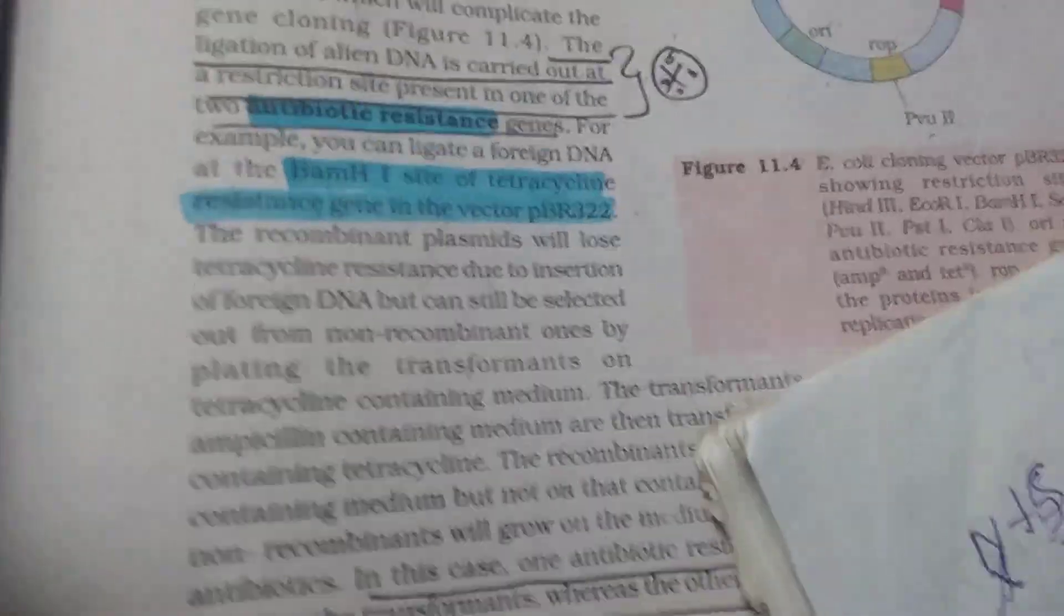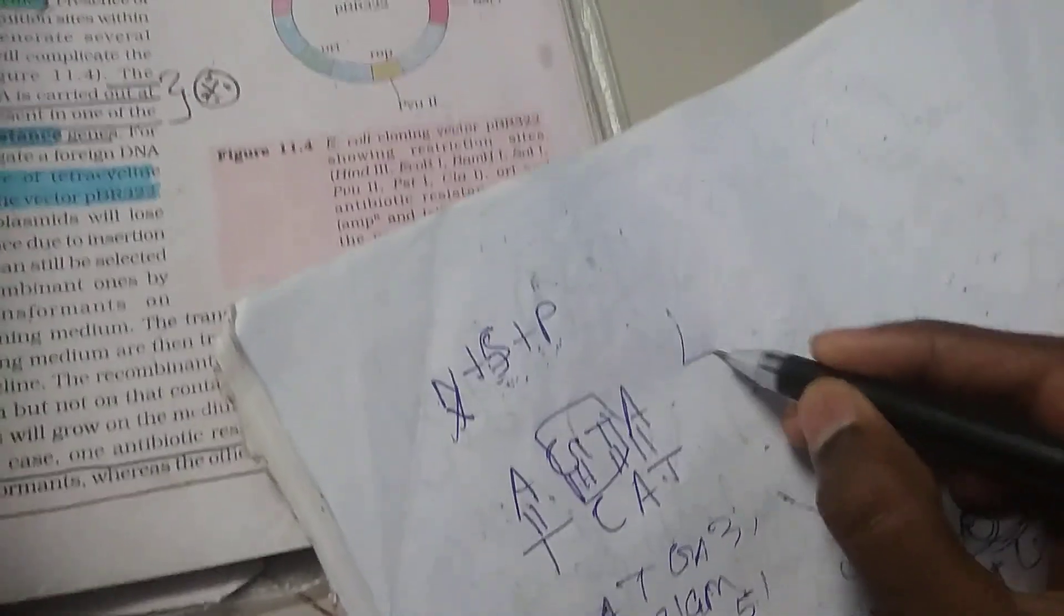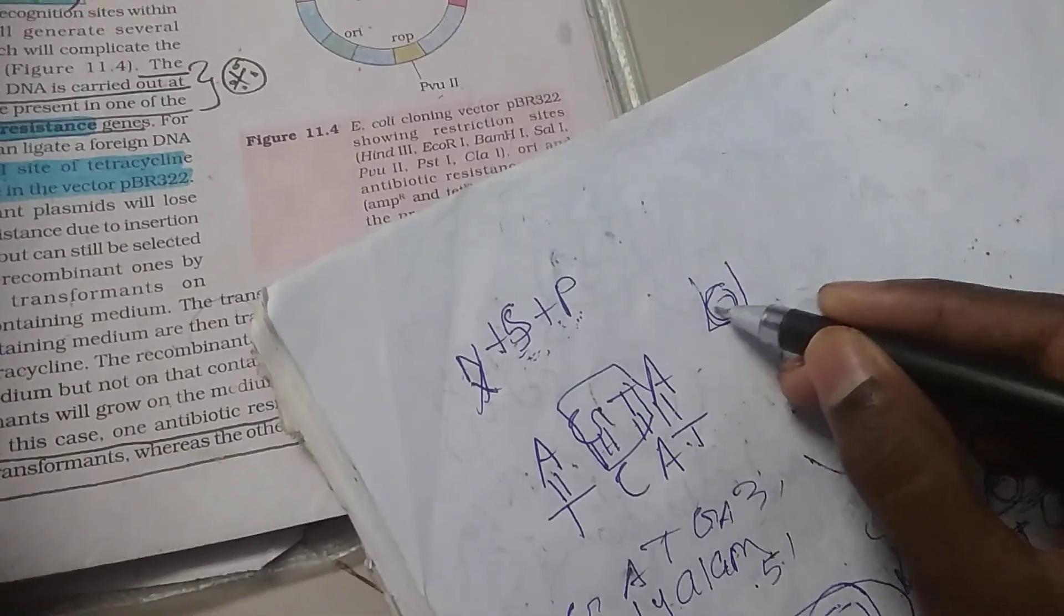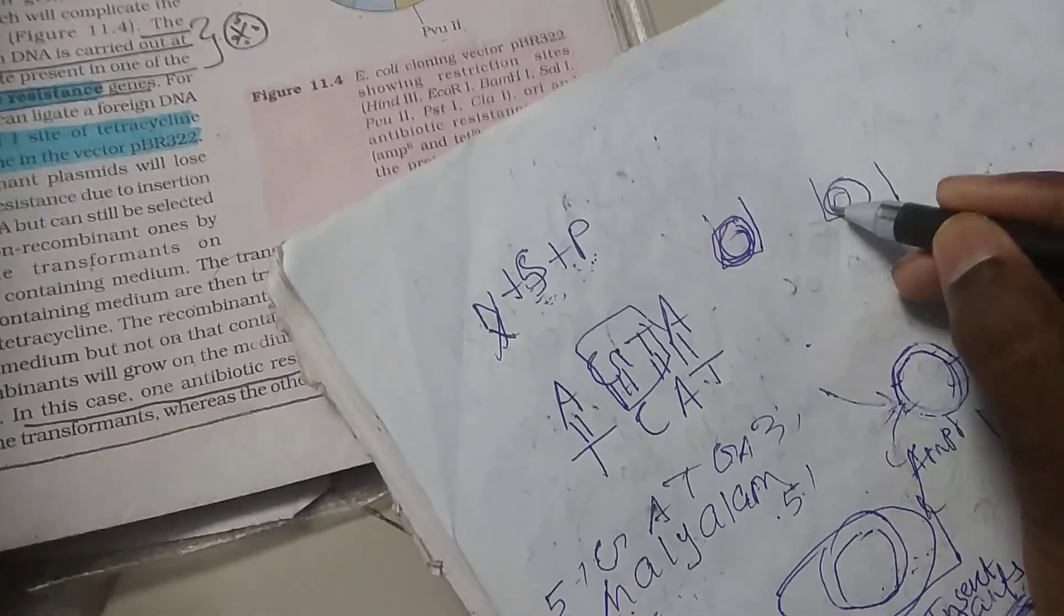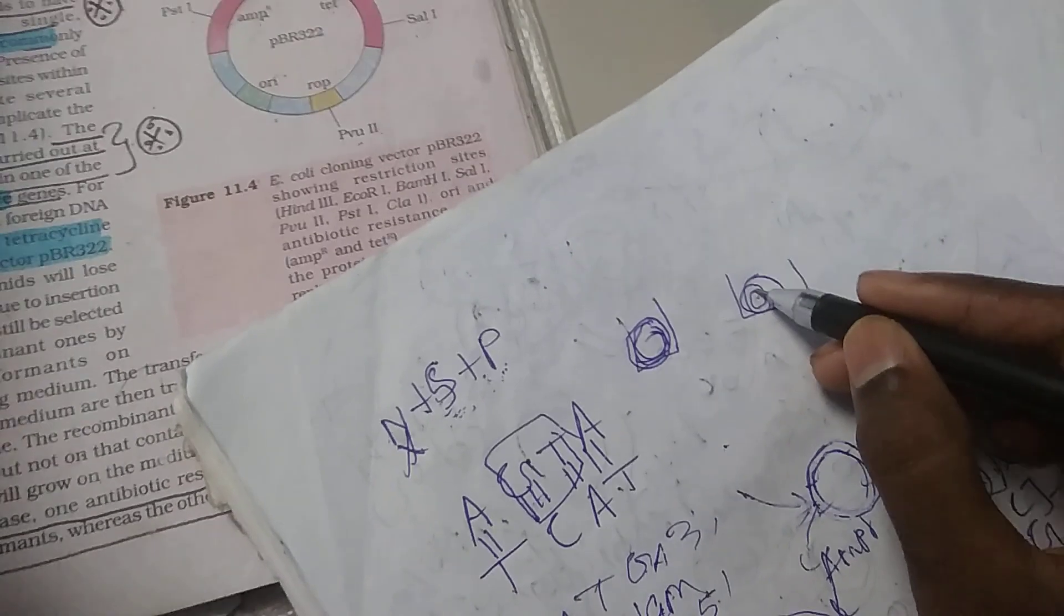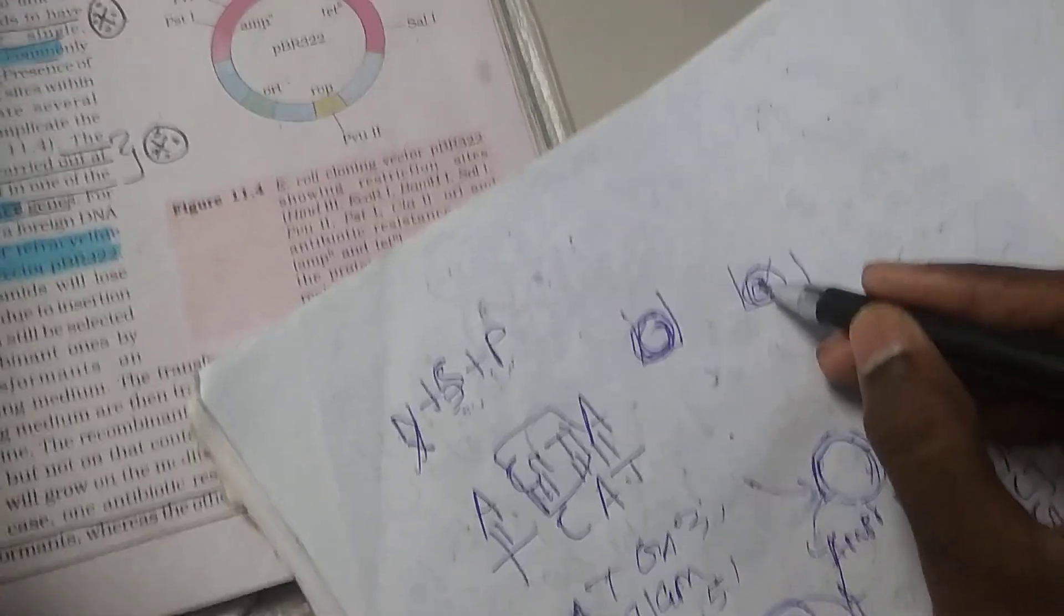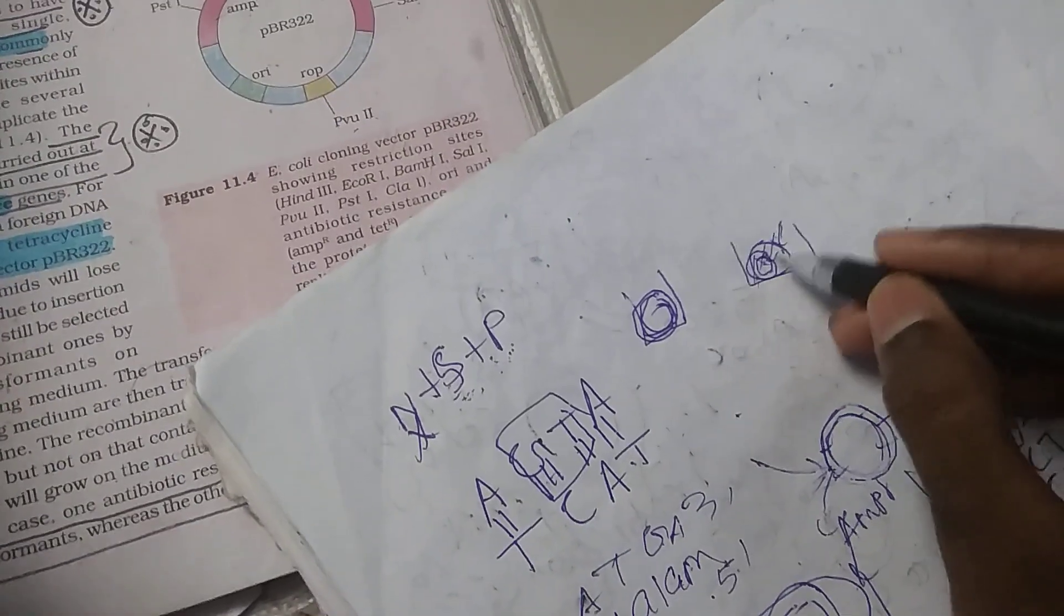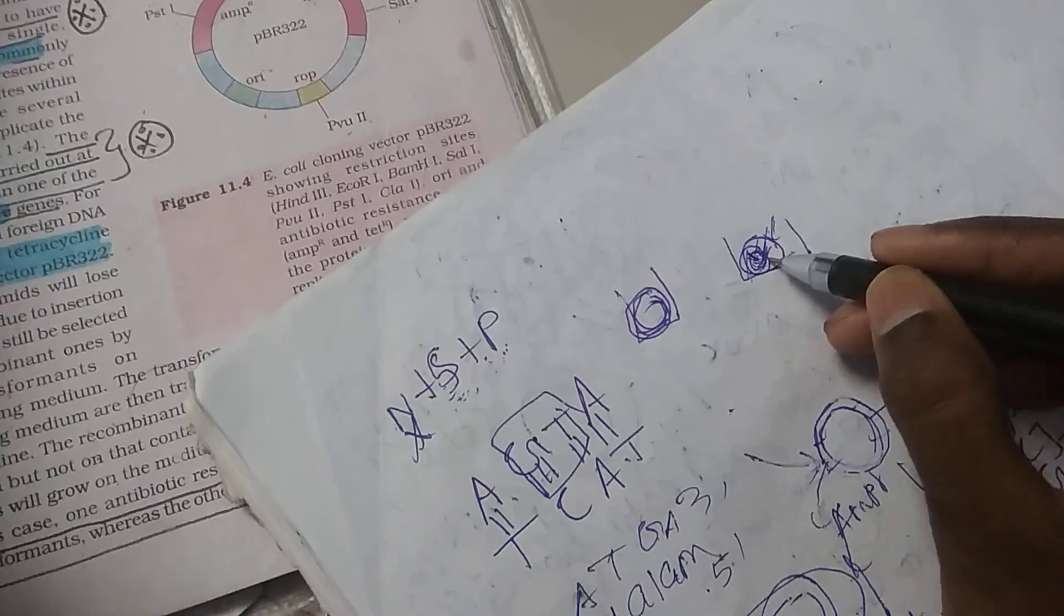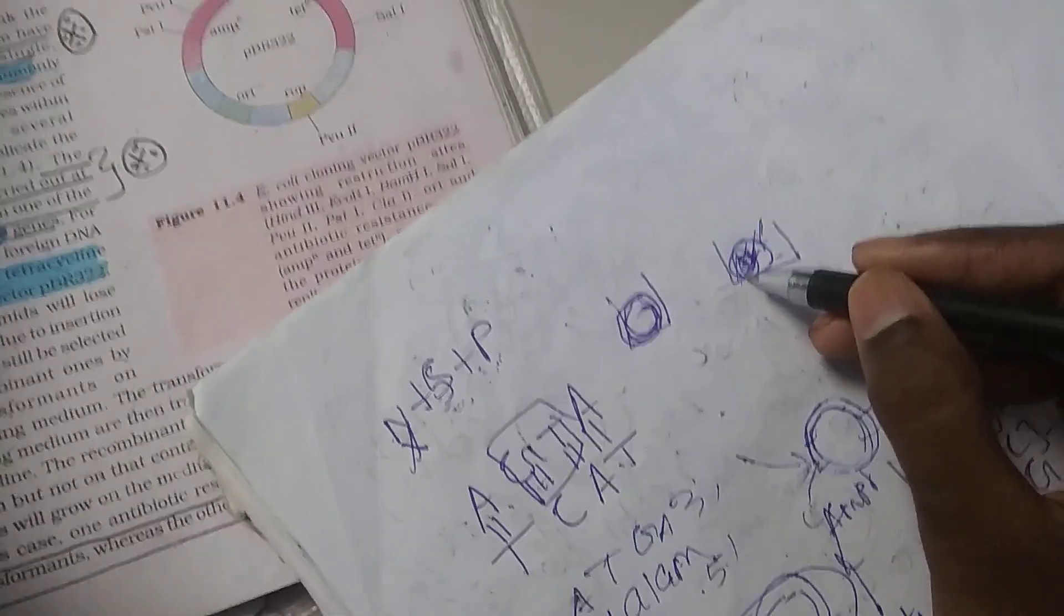I am going to insert the foreign DNA. After the plasmid is cut and ligated, we need to differentiate between recombinant and non-recombinant. So if your cells contain the recombinant, we need to plate them.